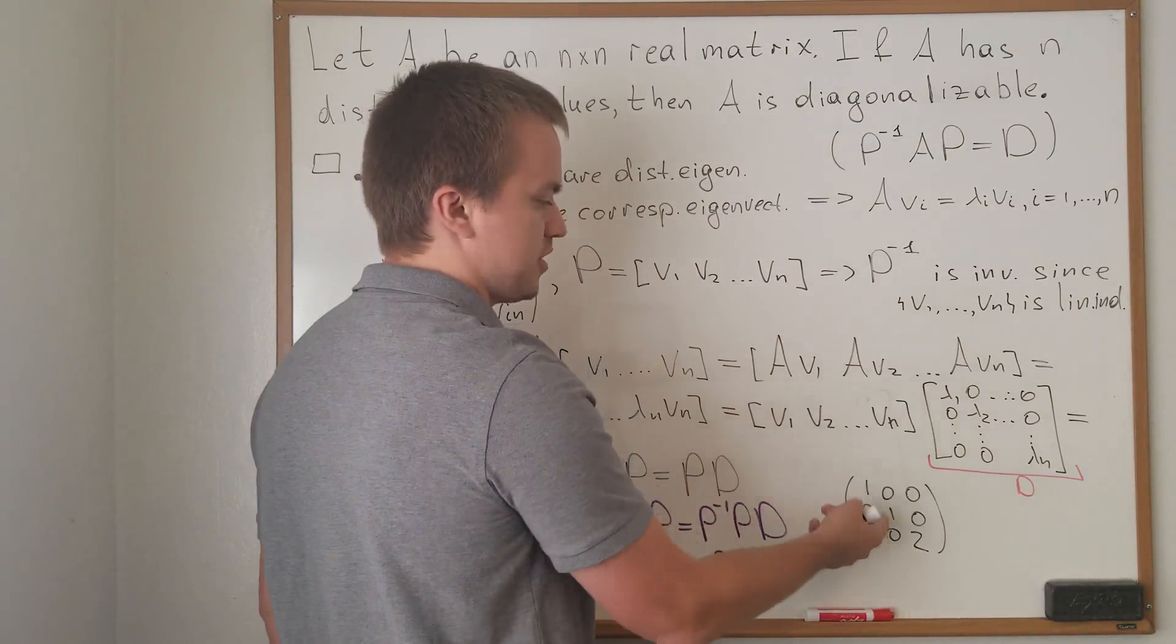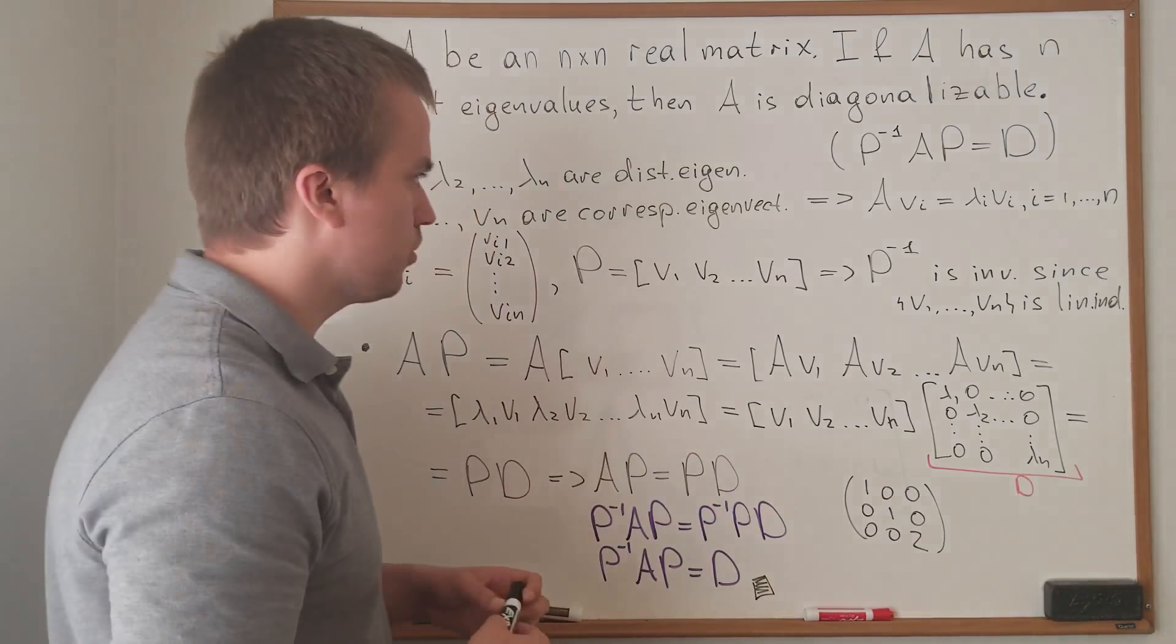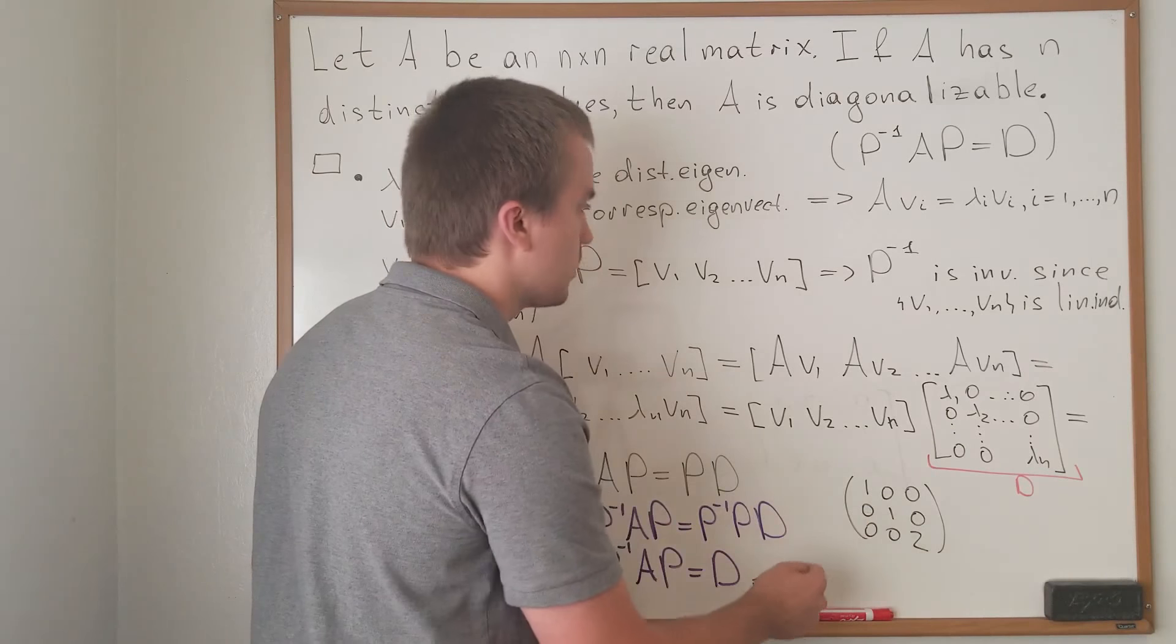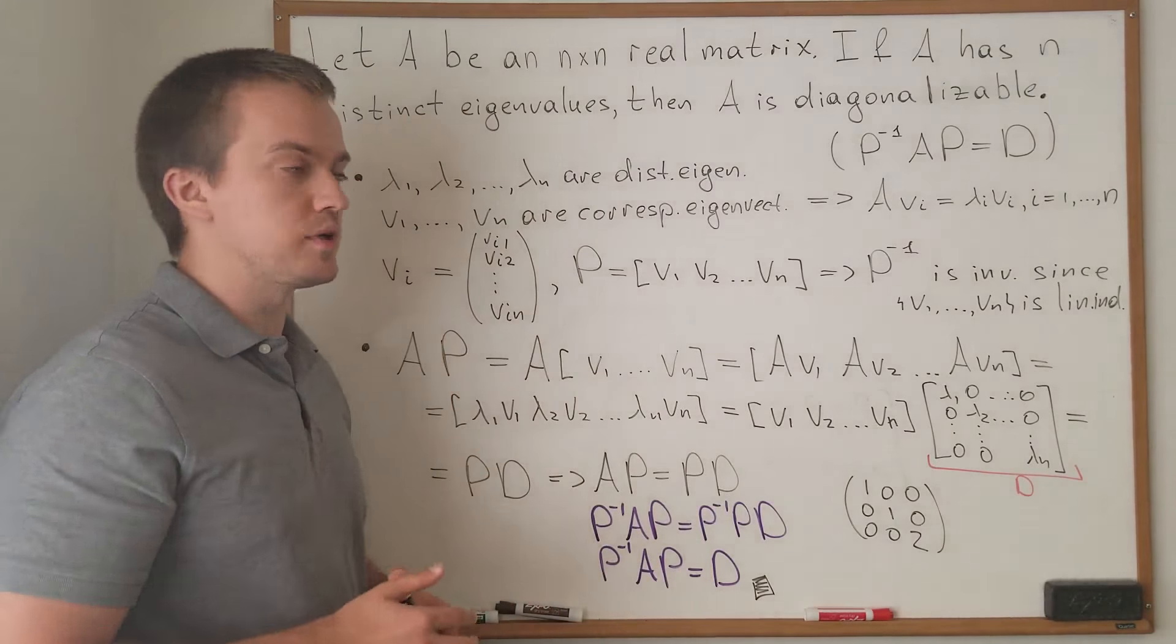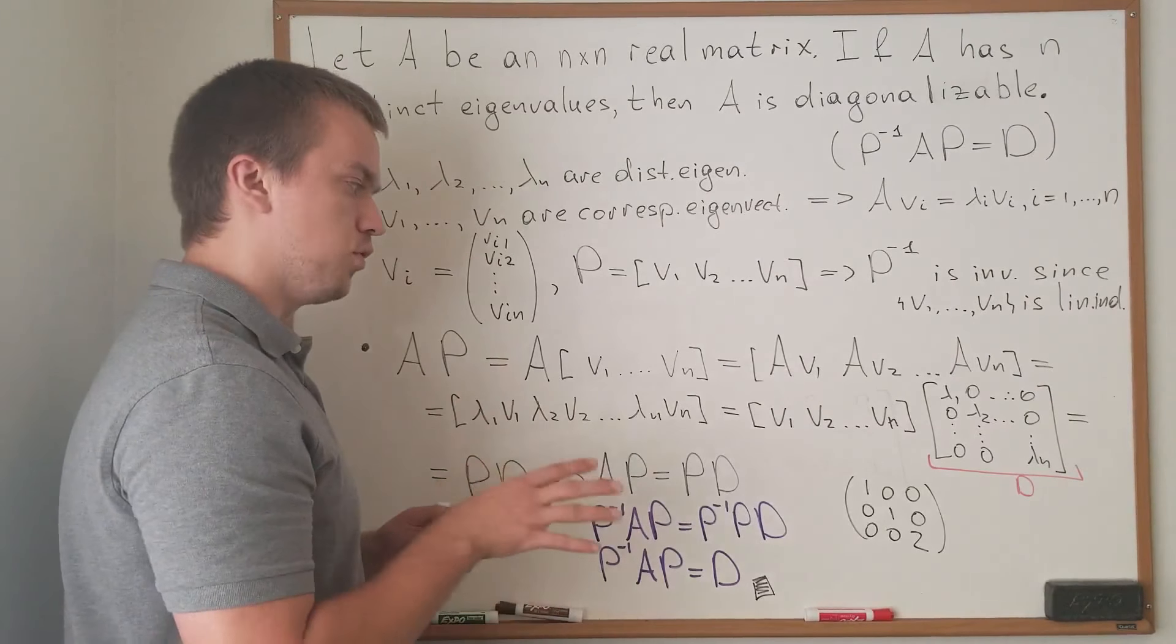But I have repeated eigenvalues. So how am I going to know, when I have repeated eigenvalues, if my matrix is diagonalizable or not? In this case, we need to study Jordan canonical form, and in my next videos I want to move towards that direction.